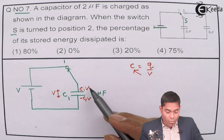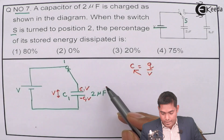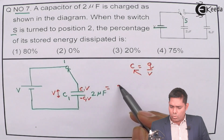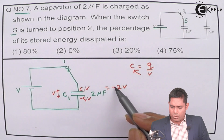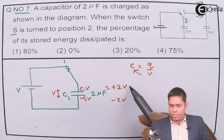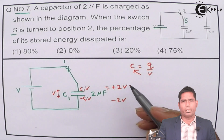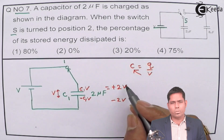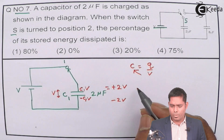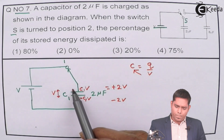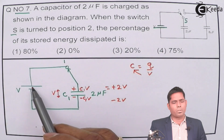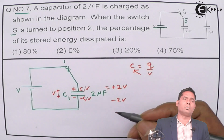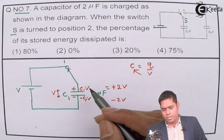So this is how the capacitor is charged. Taking C1 = 2 microfarad and voltage = V, the charge is 2V microcoulombs. This is positive on one plate and negative on the other. If I connect it the reverse way, that will also not affect the answer, but one side is positive and the other side is negative.